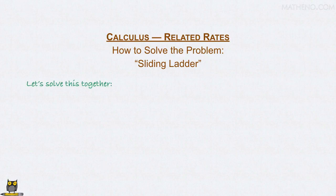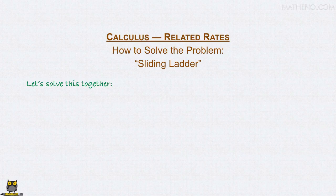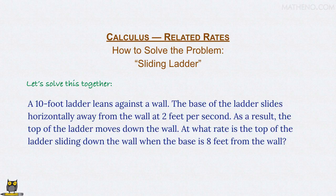We're going to solve together our next related rates problem, this one another classic that often appears on exams. A 10-foot ladder leans against a wall. The base of the ladder slides horizontally away from the wall at 2 feet per second.